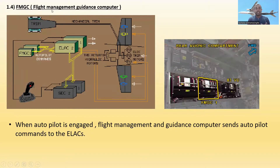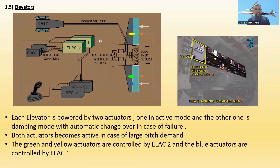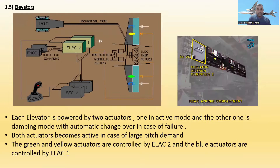1.4 — Flight Management Guidance Computer (FMGC). It is also located in the rear avionics compartment. There are two FMGCs. This computer works only when the autopilot is engaged. When autopilot is engaged, the Flight Management and Guidance Computer sends autopilot commands to ELAC — specifically to ELAC 1 and ELAC 2.